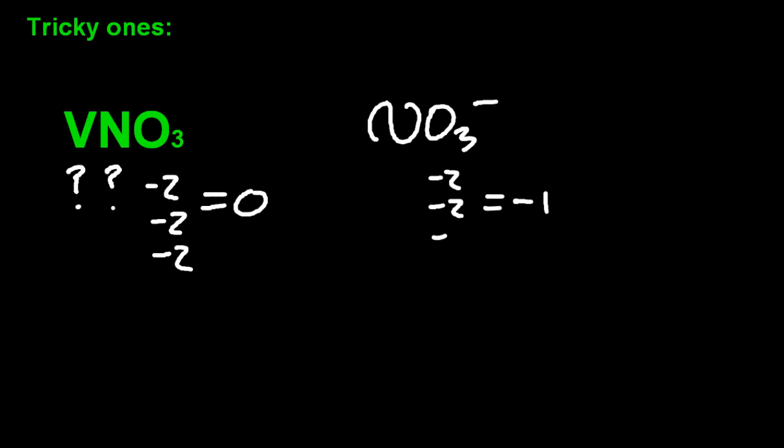Some tricky ones. Vanadium nitrate. There is no rule for nitrogen or vanadium. So how's that possible? Well, hopefully you remember that nitrate is minus one. And from that you can work out that vanadium is plus one in this case.